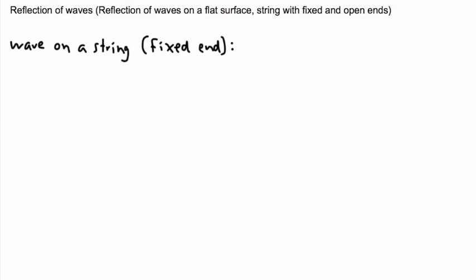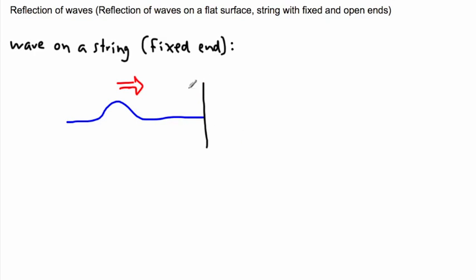One property of waves we can cover is reflection — that's when things bounce off things. Let's look first at a wave on a string and see what happens. If we have a fixed end, let's say we have a string and we create a wave in it. The wave travels along the string and hits a fixed end, like a wall.